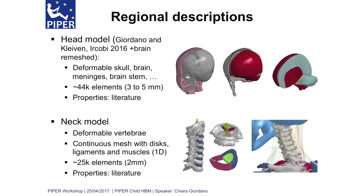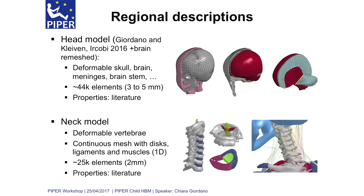The brain is divided into cerebrum and cerebellum, with cylindrical topology for the brainstem. The main important meninges are included: falx, tentorium, pia mater, and dura mater. Overall we have 44,000 elements with a resolution varying between 3 to 5 millimeters, done to capture the most important structures while keeping a reasonable time step for full body simulations. Material properties come mostly from the literature, with some assumptions or interpolations, especially for age ranges where material properties are not available. For the neck model, we also have completely deformable vertebrae — porous bone as hexa, cortical bone as shell elements — with elliptical topology for a continuous mesh with the disks, ligaments and muscles that are mostly 1D, and 25,000 elements at around 2 millimeter resolution.